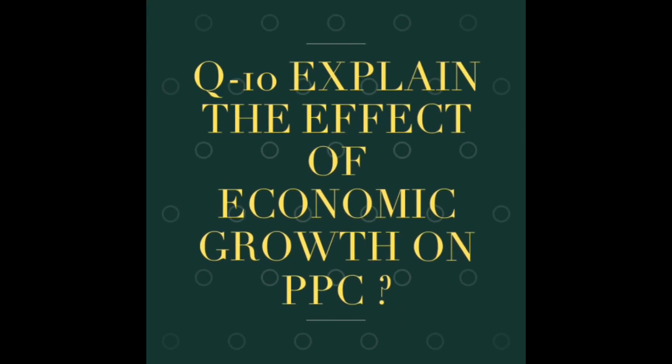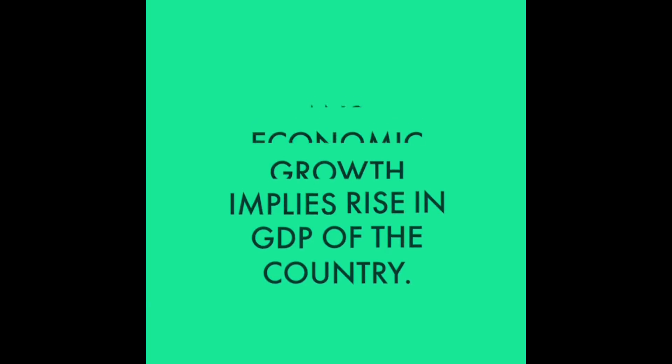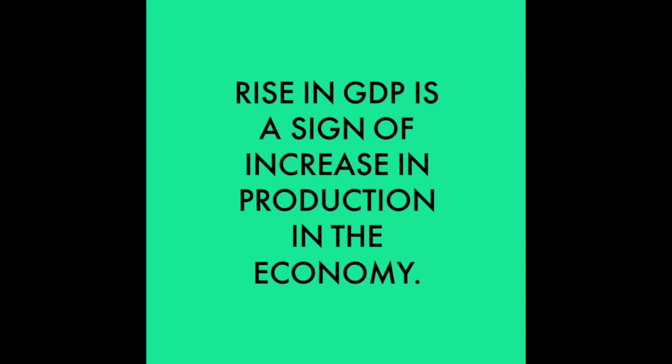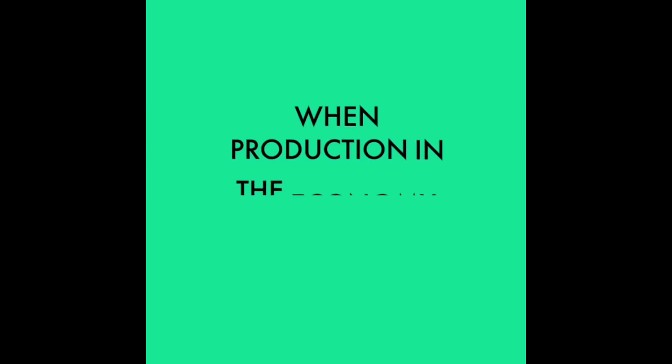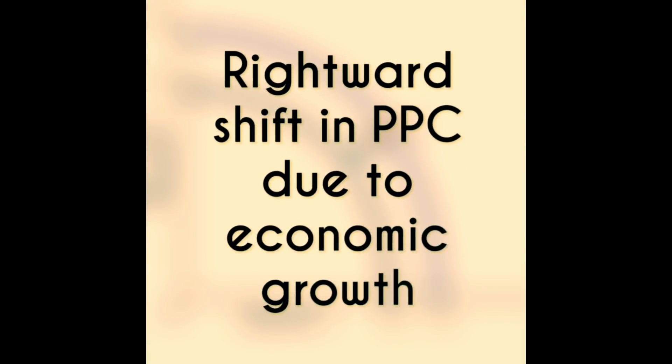Question number ten: explain the effect of economic growth on PPC. Economic growth implies a rise in GDP of the country. A rise in GDP is a sign of increase in production in the economy. When production in the economy rises, the PPC shifts rightward. The rightward shift in PPC due to economic growth is shown in this diagram.